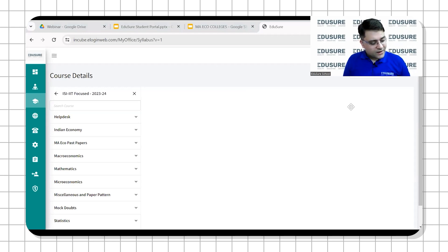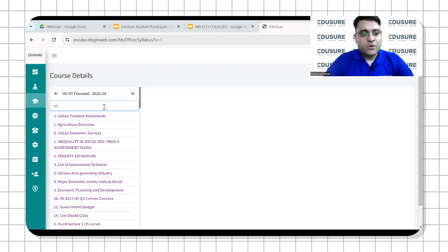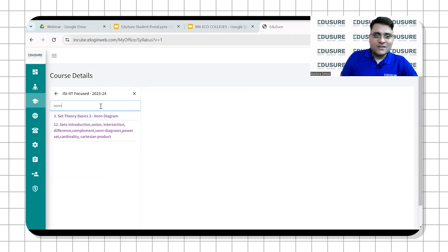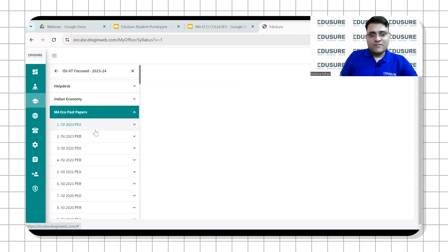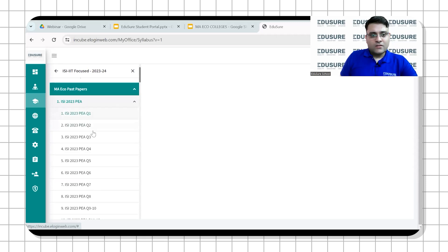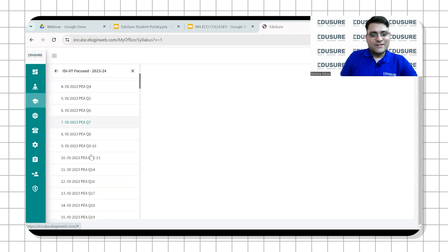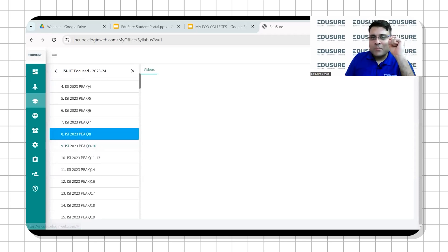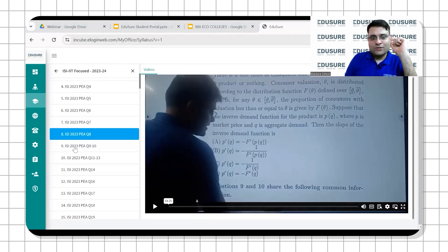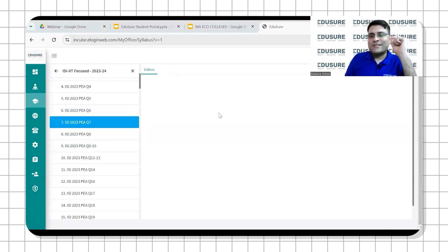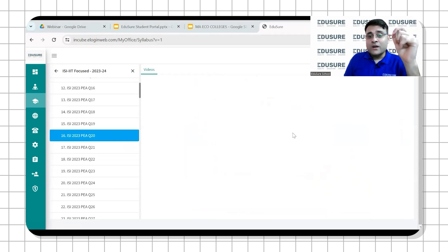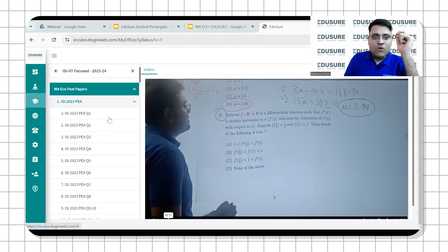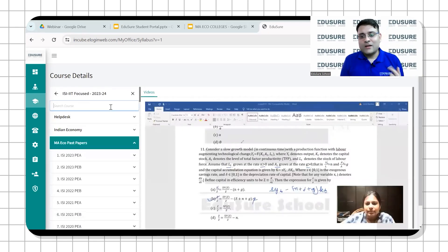Supposing you want to brush up your Venn diagram basics, you can search, you have a search bar. There is an area called past papers. ISI 2023 PA, all the solutions are here: 1, 2, 3, 4, 5, 6, 7, 8. Each and every video is for a particular question. Question-wise solution is there. You pick a question number, the solution is there. It is so exhaustive.